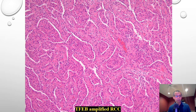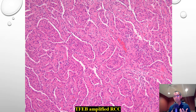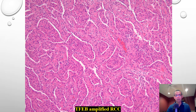In this example, the tumor has prominent oncocytic and papillary morphology but does not appear to be classic papillary renal cell carcinoma. From all these examples, keep in mind that when you have unusual morphology that doesn't fit a specific subtype of renal cell carcinoma, you should think about translocation renal cell carcinoma.